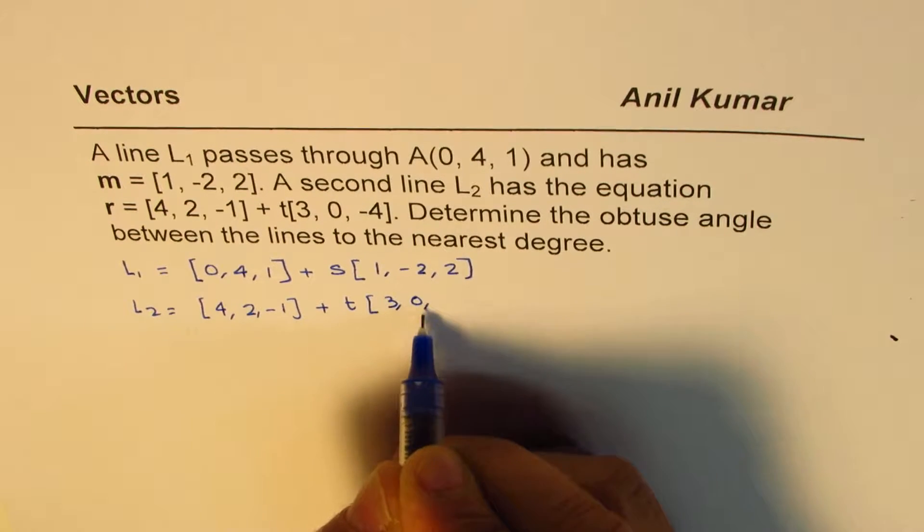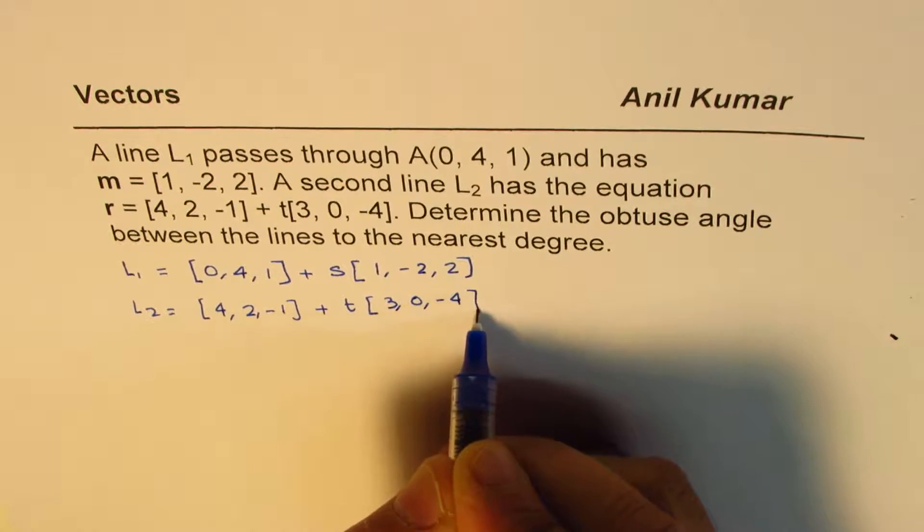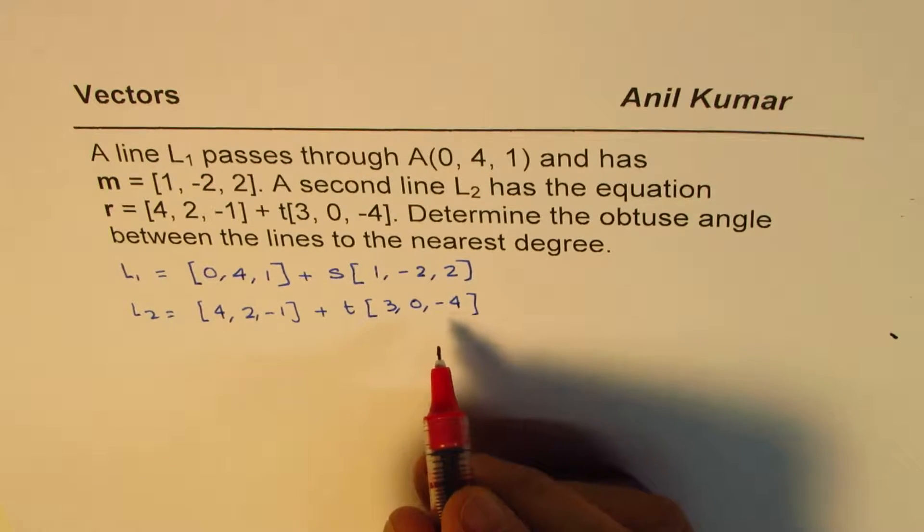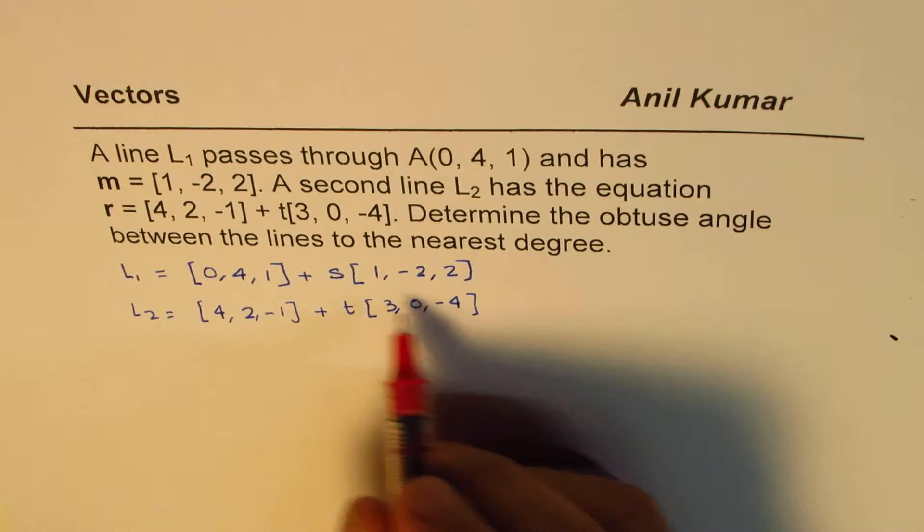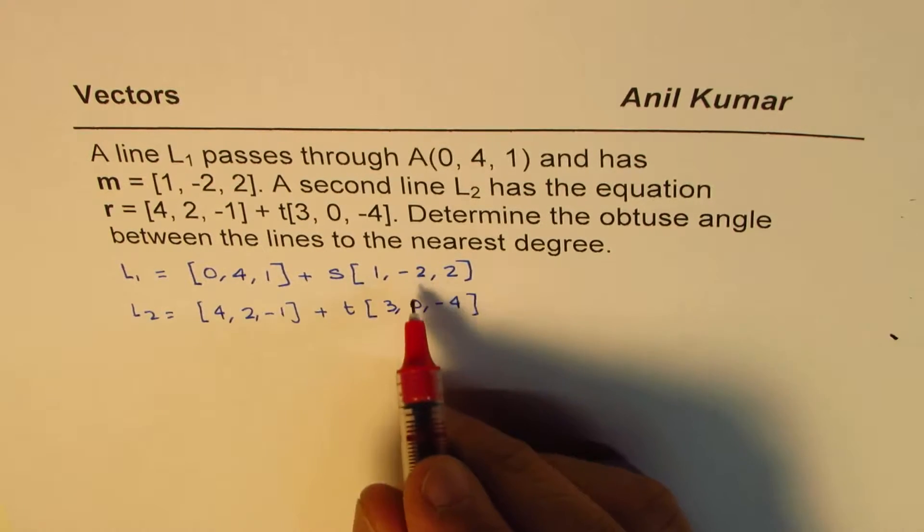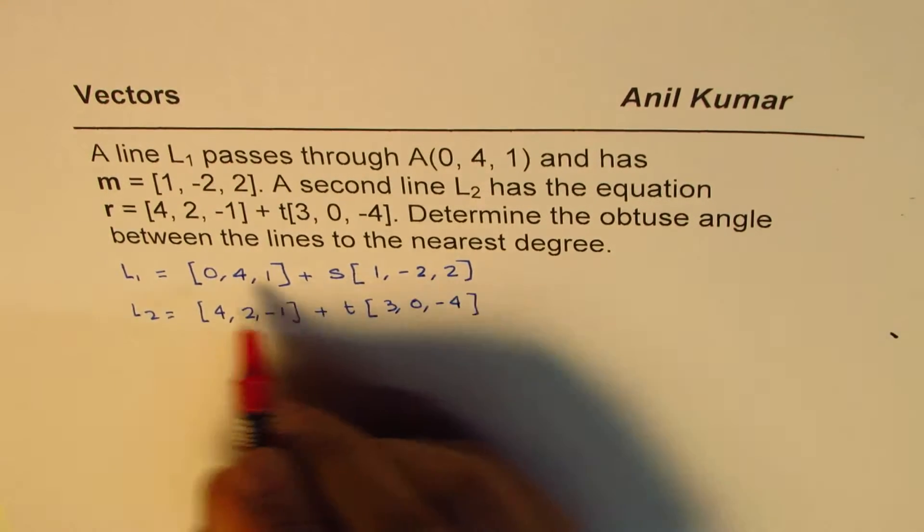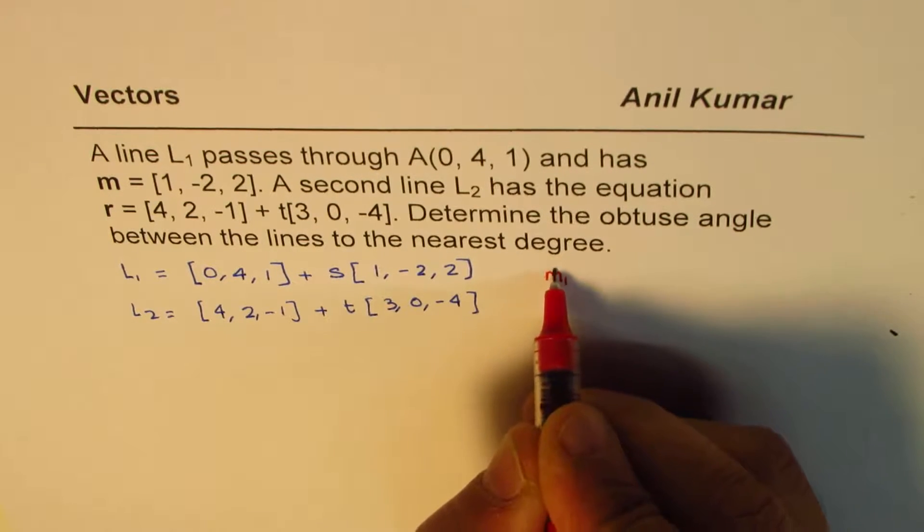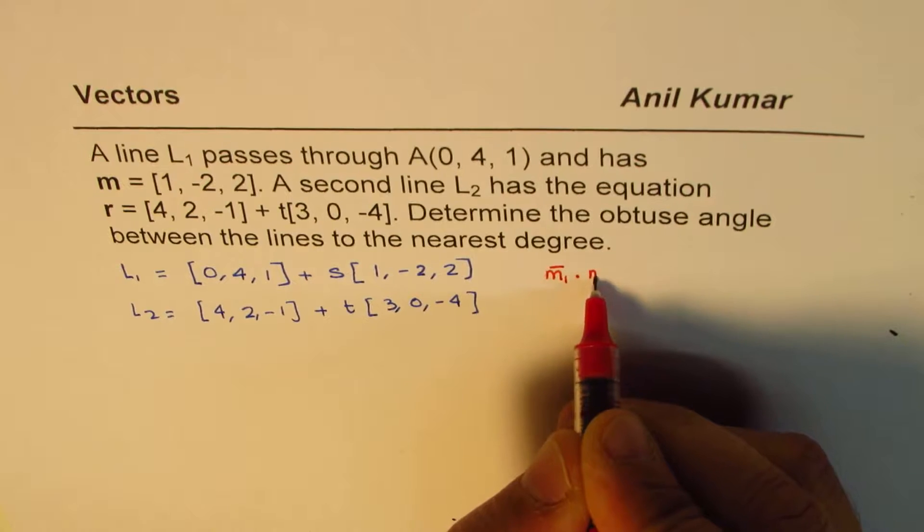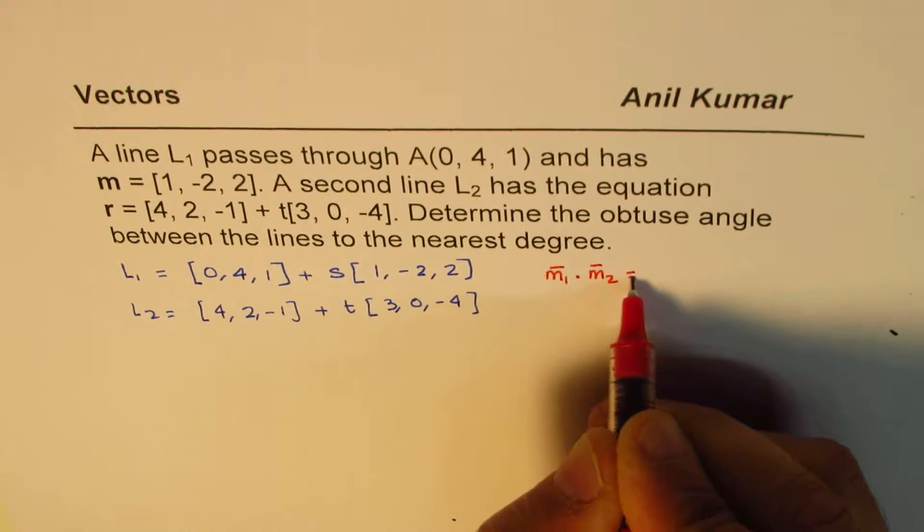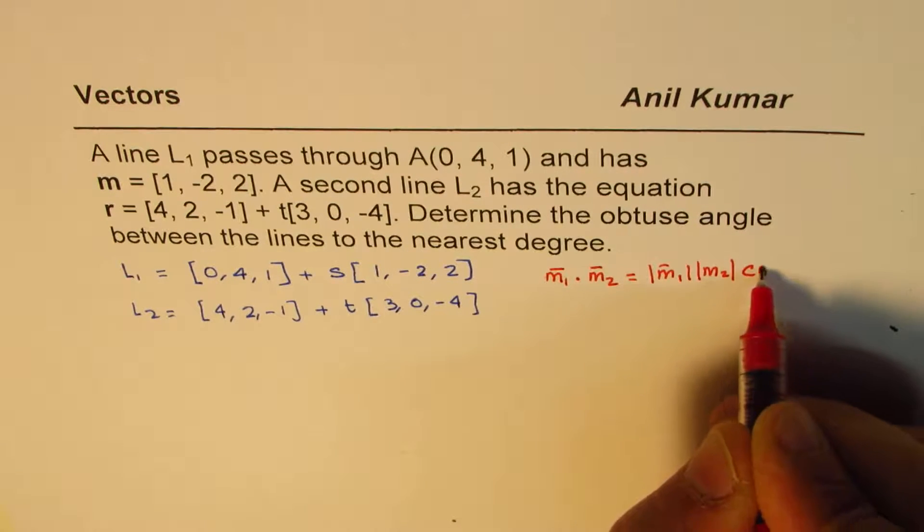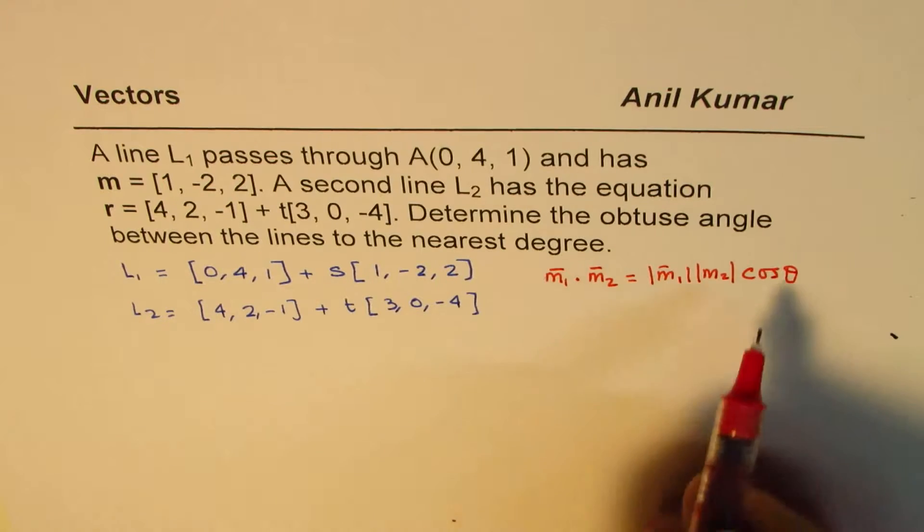Now we need to find the angle between these two lines. To find the angle, we can use the dot product. So the dot products can help us find the angle. So basically we'll check into their directions. So the direction of the first line dot direction of this second line will be equals to magnitude, product of their magnitudes times cosine of angle between them.